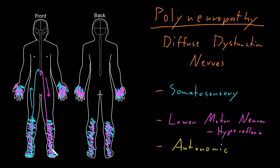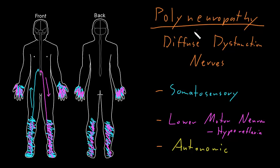This pattern of symmetric distal somatosensory and lower motor neuron abnormalities, when it involves both feet and both hands, is called the stockings and gloves pattern of polyneuropathy. It's pretty distinctive for polyneuropathy — you can imagine a person wearing long stockings and shorter gloves, and that's where all their neurological abnormalities are.